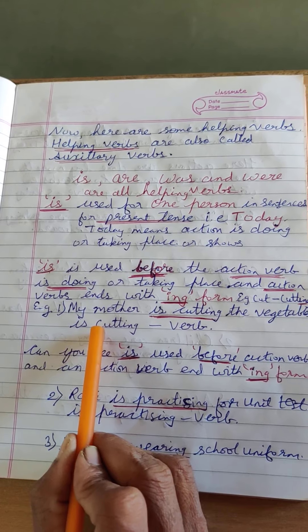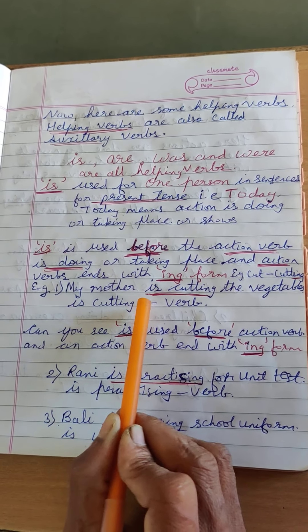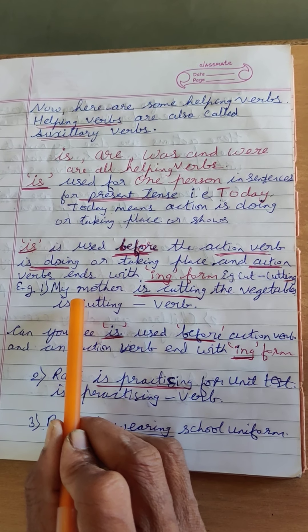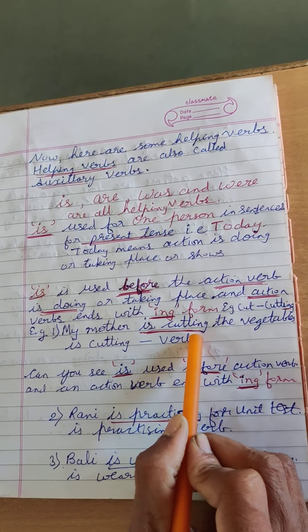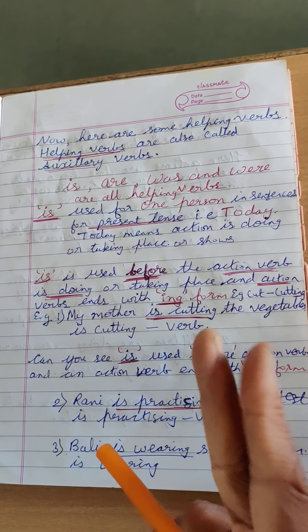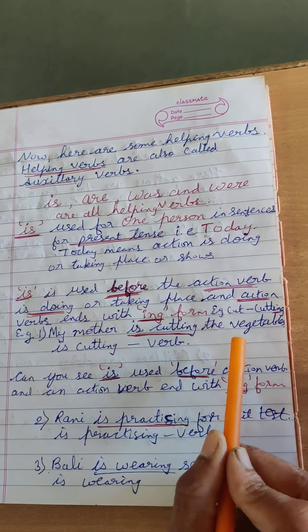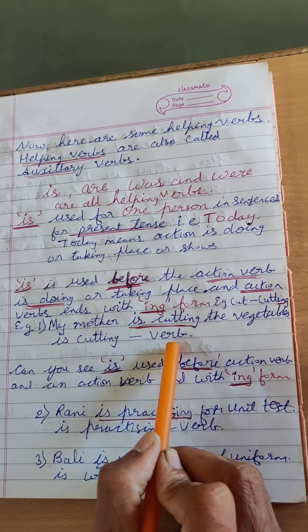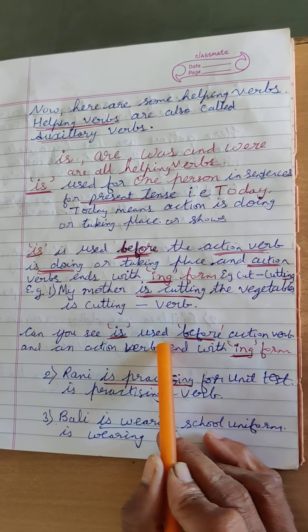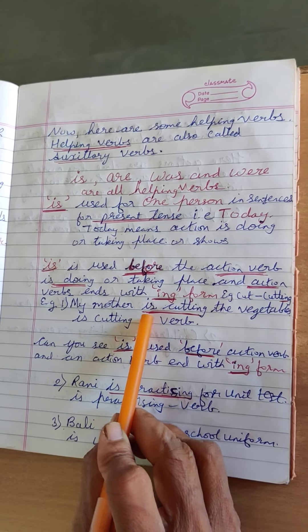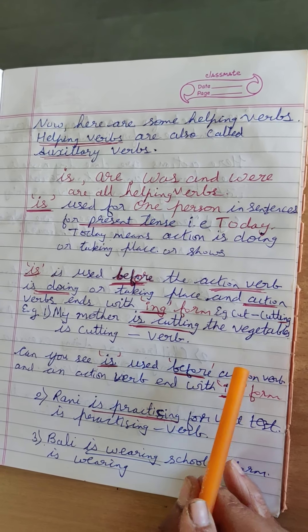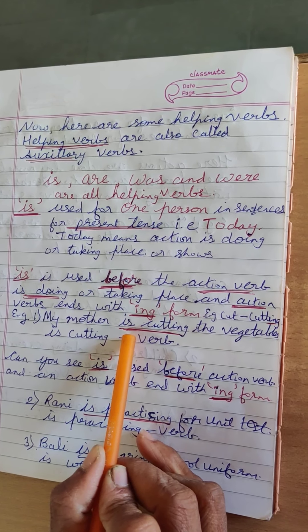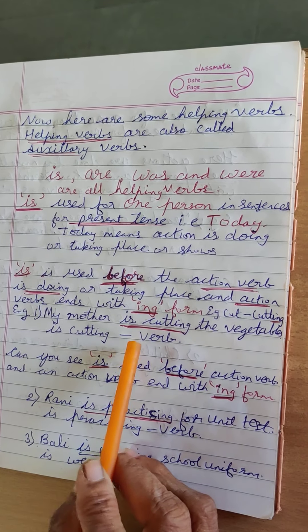Here are some examples. My mother is cutting the vegetables. Here my mother is one person. Find out the action words in this sentence: cutting. Cutting is an action word. What is mama doing? Mama is cutting the vegetables. So 'is cutting' is a helping verb. Is is used before the action verb. Before action words, you have to use a helping verb. When one person is there, you have to use 'is'.